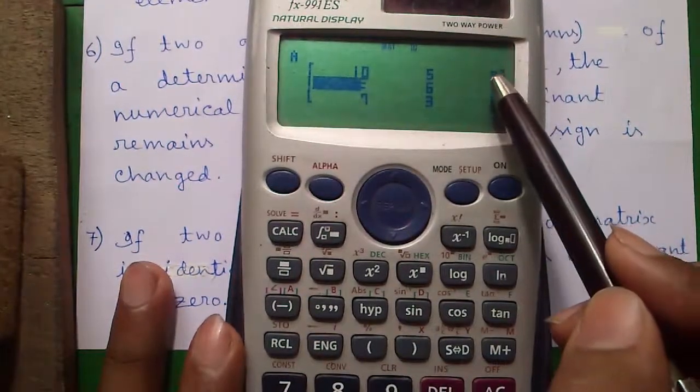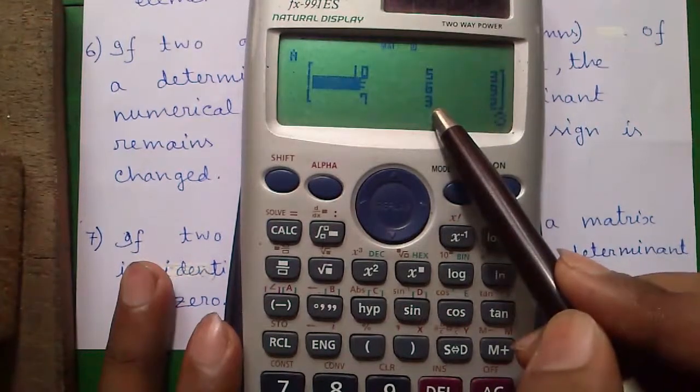That means if we interchange row 1 with row 2, the value of determinant will remain unchanged. The property applies for the columns also.